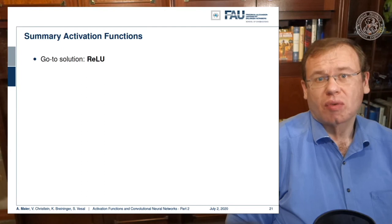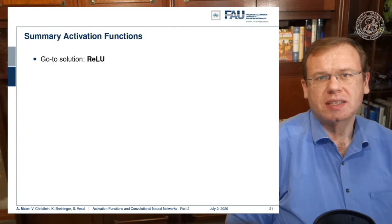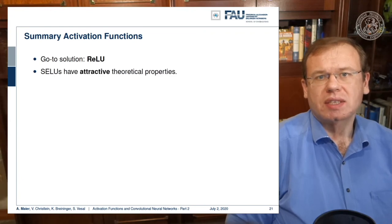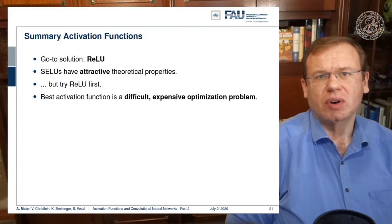Therefore, our recommendation is to go with the ReLU. They work really well. And if you have some problems, you can choose to use batch normalization, which we'll talk about in one of the next videos. Another interesting thing is the scaled exponential linear unit, because it has the self adaptation property. So this is really attractive. But try ReLU first. This is typically the way you want to go. The search for the best activation function is a difficult and expensive optimization problem, which has not led us to much better activation functions. So what we have here is sufficient for most of our problems.